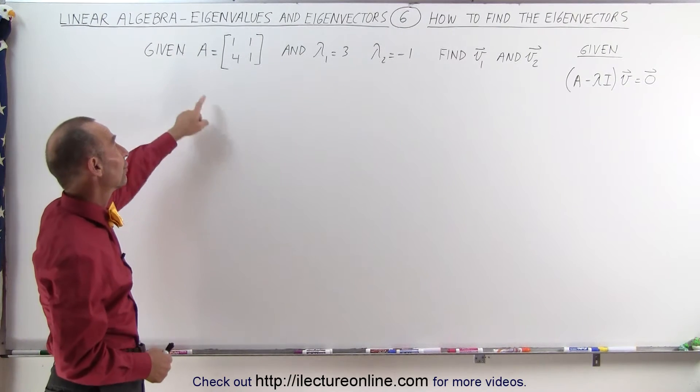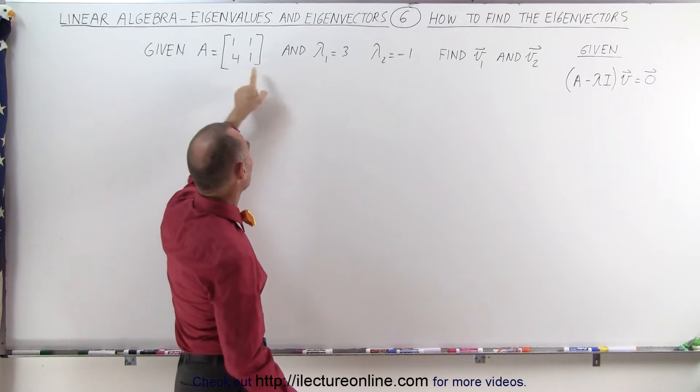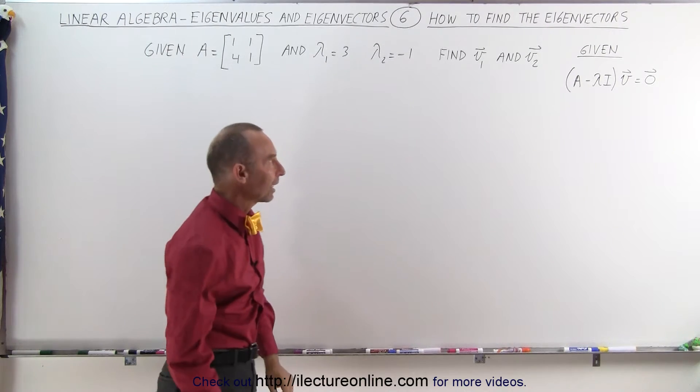Now we've seen this matrix before in the previous videos, and we already discovered that the two eigenvalues associated with this matrix are eigenvalue 1 equal to 3, and the second one equal to negative 1.